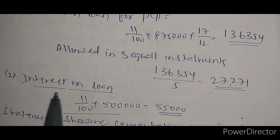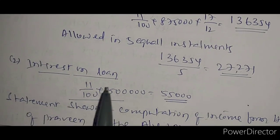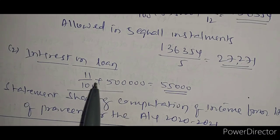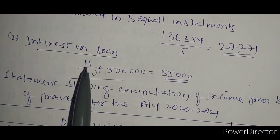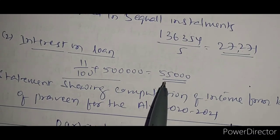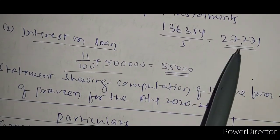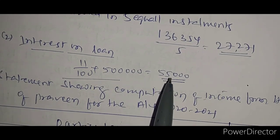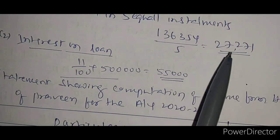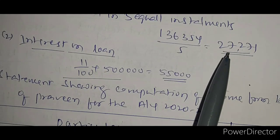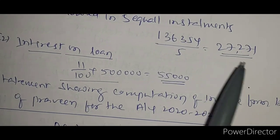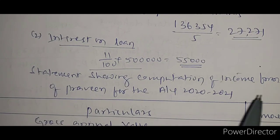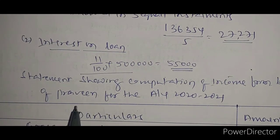Next, the interest on loan for the current year: 11% of five lakh fifty five thousand. This is the interest on loan for the current year, to be added to the interest on loan for PCP in the final statement.